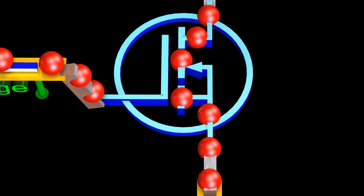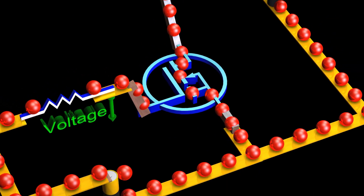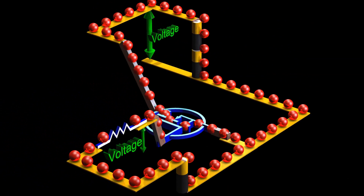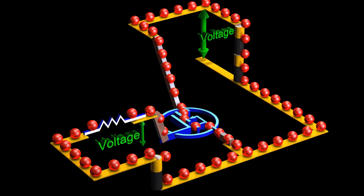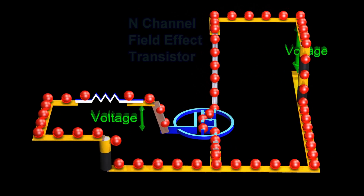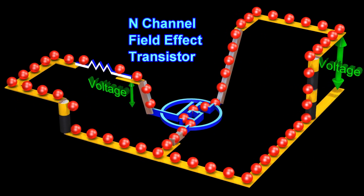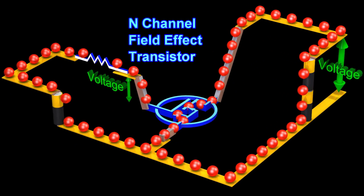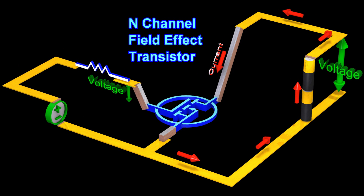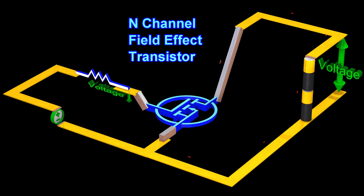Let's now consider a N-channel field-effect transistor. Here, it is not the current, but the voltage on the middle terminal which controls the current through the other two terminals.